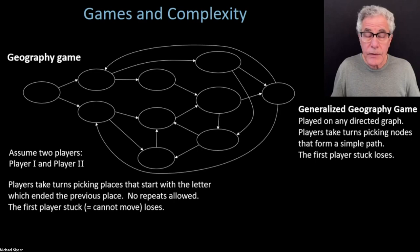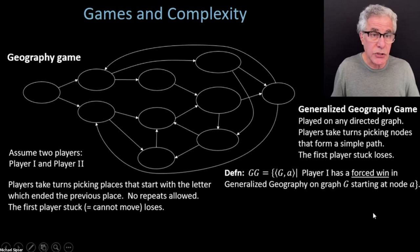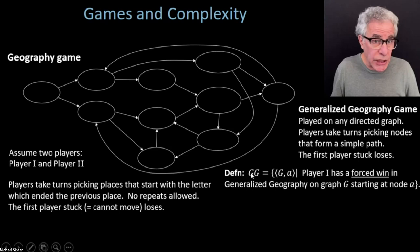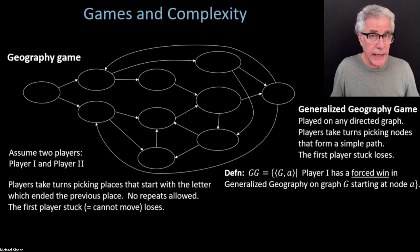We're going to look at the computational complexity of deciding, for a given graph and starting point, which side would win if both players played optimally. We'll name that problem GG. So a graph and starting node A is in the language GG if player one, who must play at node A to start off, has a forced win in that generalized geography game on that graph starting at A.